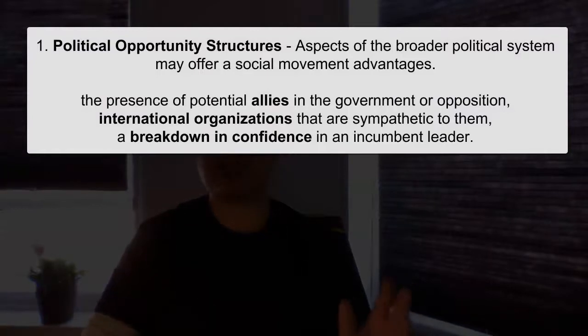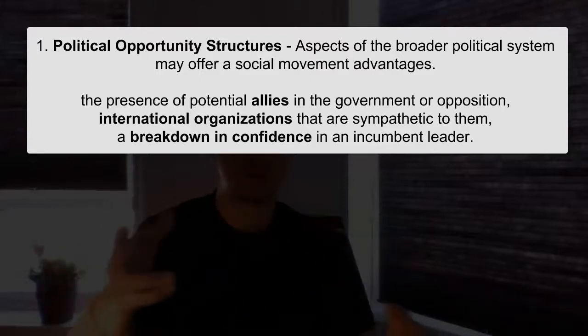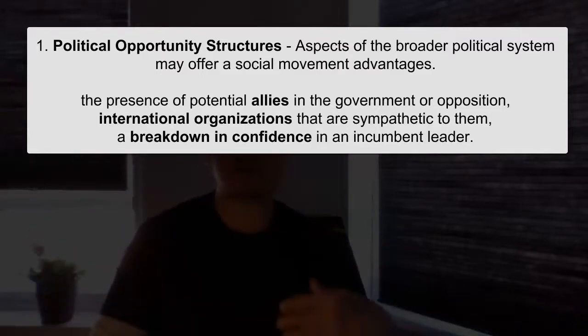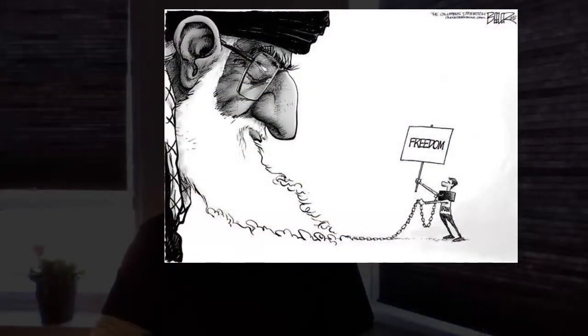Political opportunity structures include: the presence of potential allies in government or opposition; international organizations sympathetic to the movement that can put pressure on domestic governments; and the breakdown of confidence in government or leadership — that is, loss of legitimacy. These are aspects of the general political system called political opportunity structures.